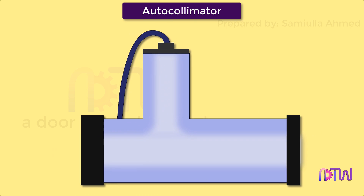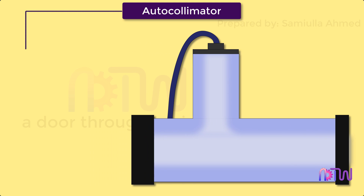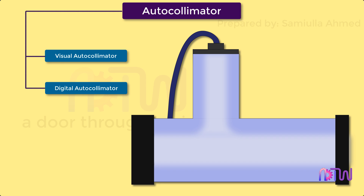An autocollimator is an optical instrument. It is a non-contact type instrument which is used for measuring angles. They are used to align components and measure deflection in optical or mechanical systems. There are basically two types of autocollimators: Visual Autocollimator and Digital Autocollimator. This video covers the Visual Autocollimator.